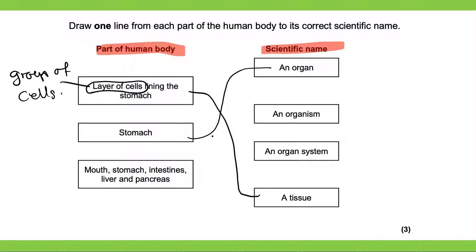Finally, we have the mouth, stomach, intestines, liver and pancreas. As you can see, all of these are types of organs. So these are all different types of organs.